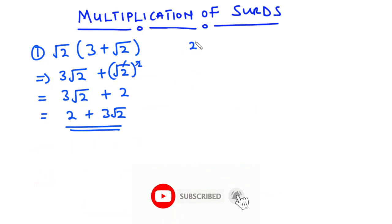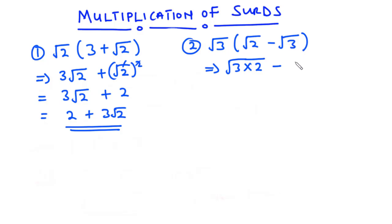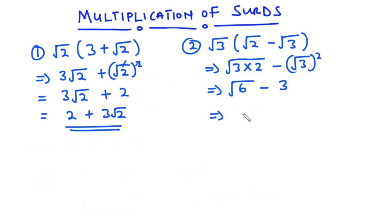Now let's solve the second one. We have root 3 multiplying root 2 minus root 3. Like we did for the first example, we are going to multiply root 3 across. So root 3 times root 2 gives us root 6, minus root 3 times root 3, which is root 3 squared. The square cancels the square root, so we have root 6 minus 3. So the final expression is negative 3 plus root 6.